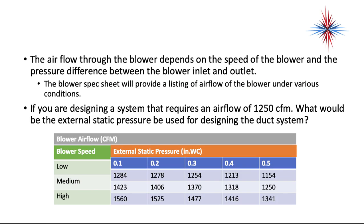The airflow through the blower depends on the speed of the blower and the pressure difference between the blower inlet and outlet. The blower spec sheet provides a listing of airflow under various conditions. For example, if you're designing a system requiring 1,250 CFM, you'd use a blower speed of medium and an external static pressure of 0.5 inches water column. The total external static pressure equals the static pressure of the supply plenum plus the static pressure of the return plenum — drop the signs, add them together as an absolute value.